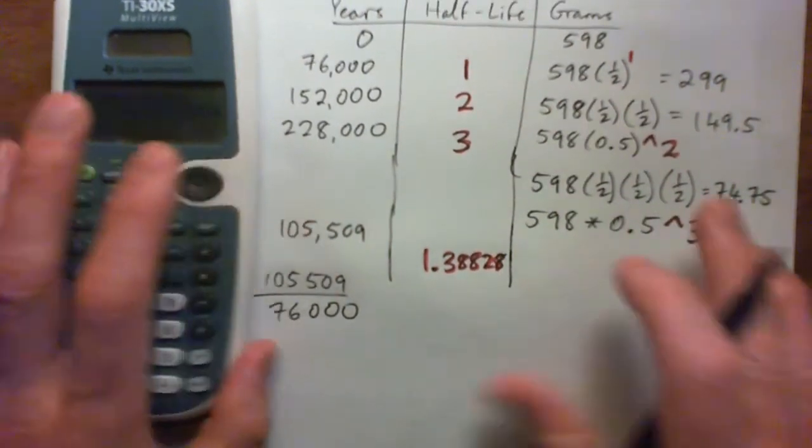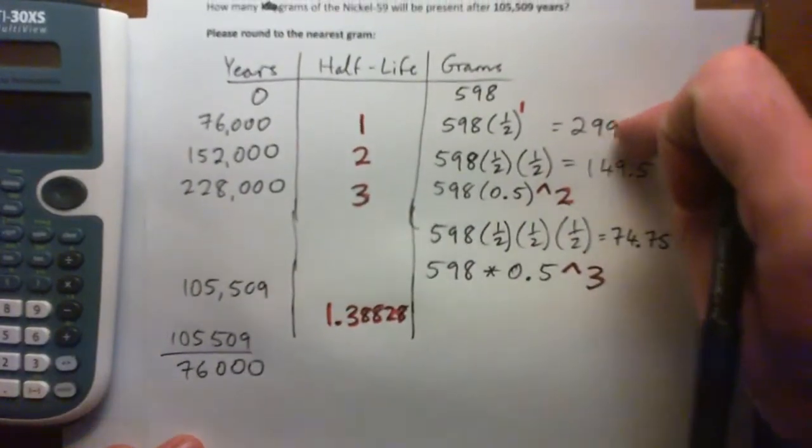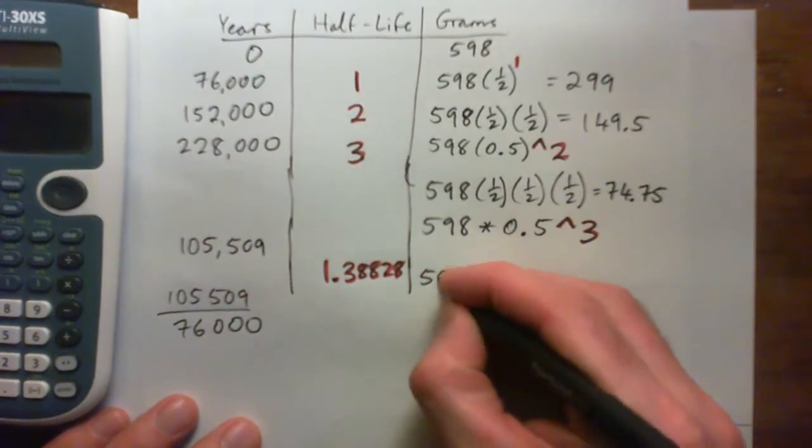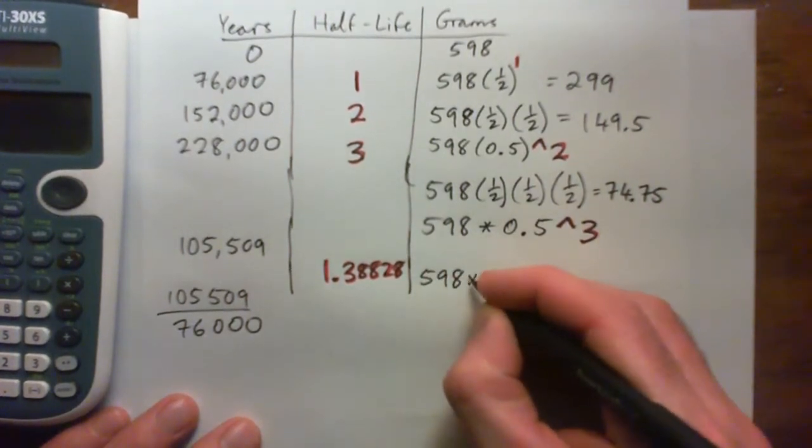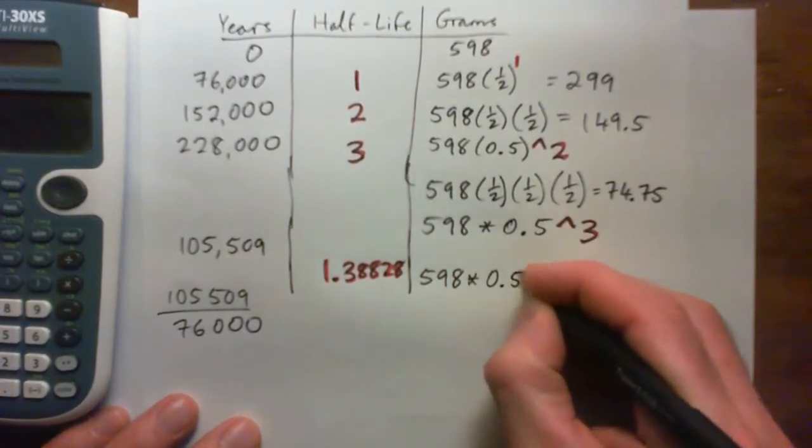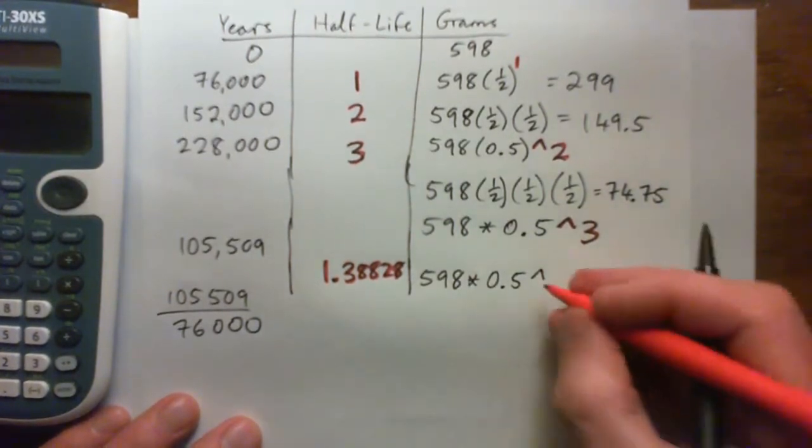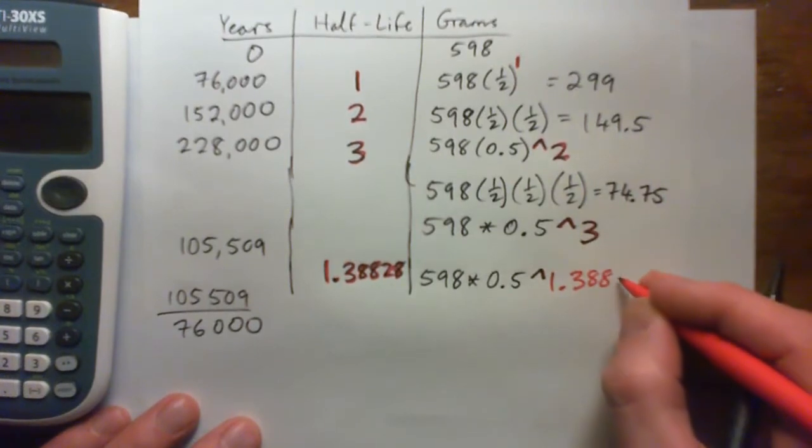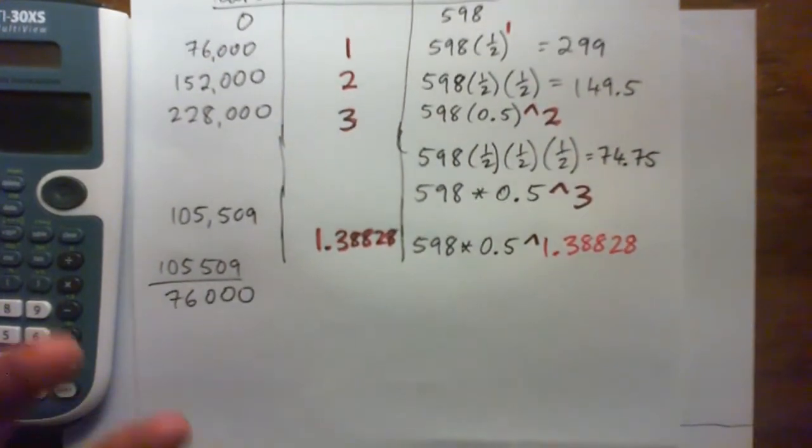So our grams should be somewhere in between 299 and 149. It should be somewhere in there. And so our formula is kind of like 598 times 0.5 to the power of, and this is where we do our 1.38828. And put it in the calculator.